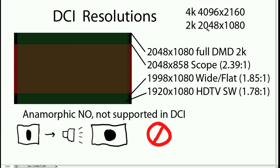2K DCI is 2048 by 1080. When we talk about 4K, simply double the numbers: 4096 by 2160 — that's what's used in the 4K version of DCI, which isn't really in real use at the moment. Sony does have some 4K projectors, but there are no real 4K playback devices for DCI currently available; some are in development, but that's still a long way off.